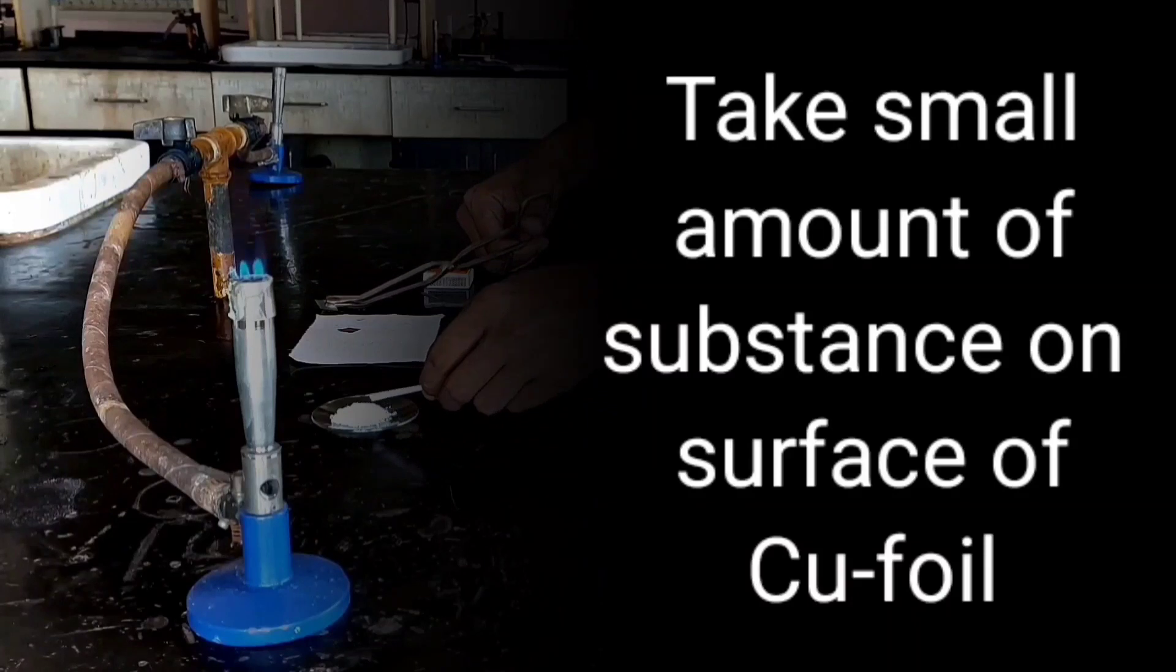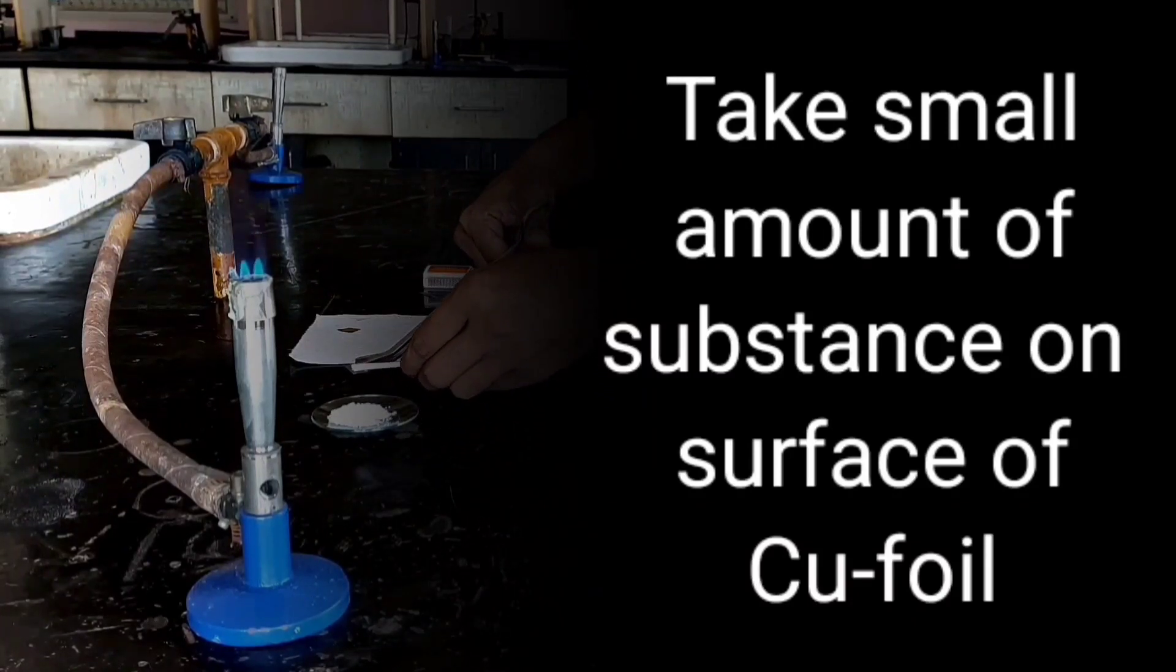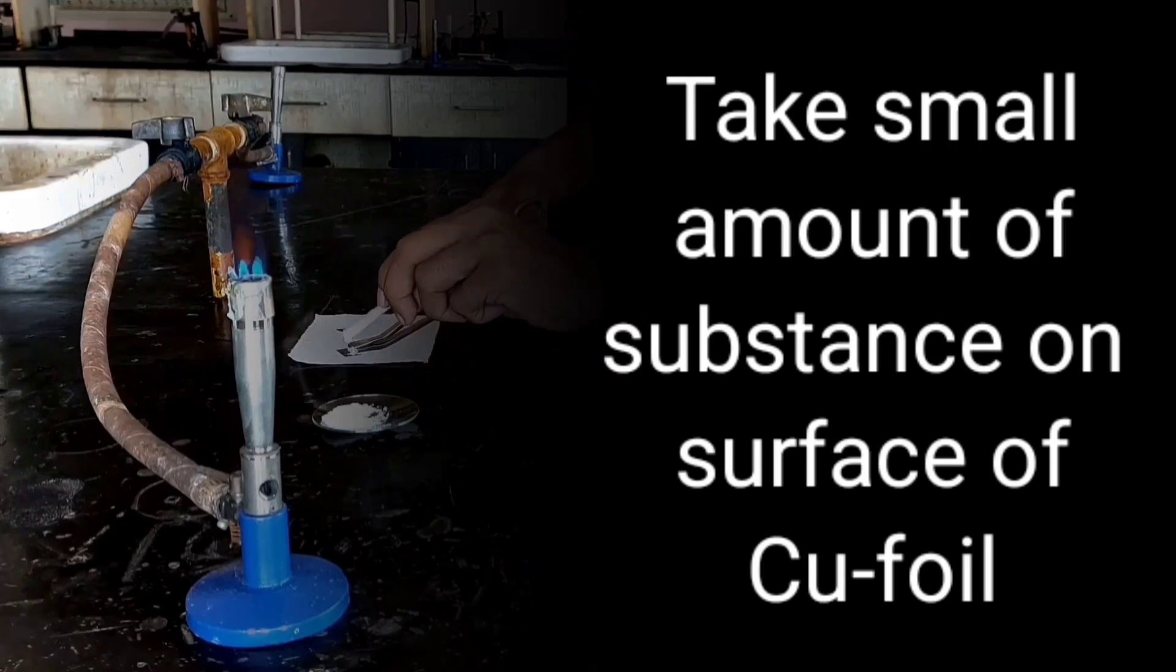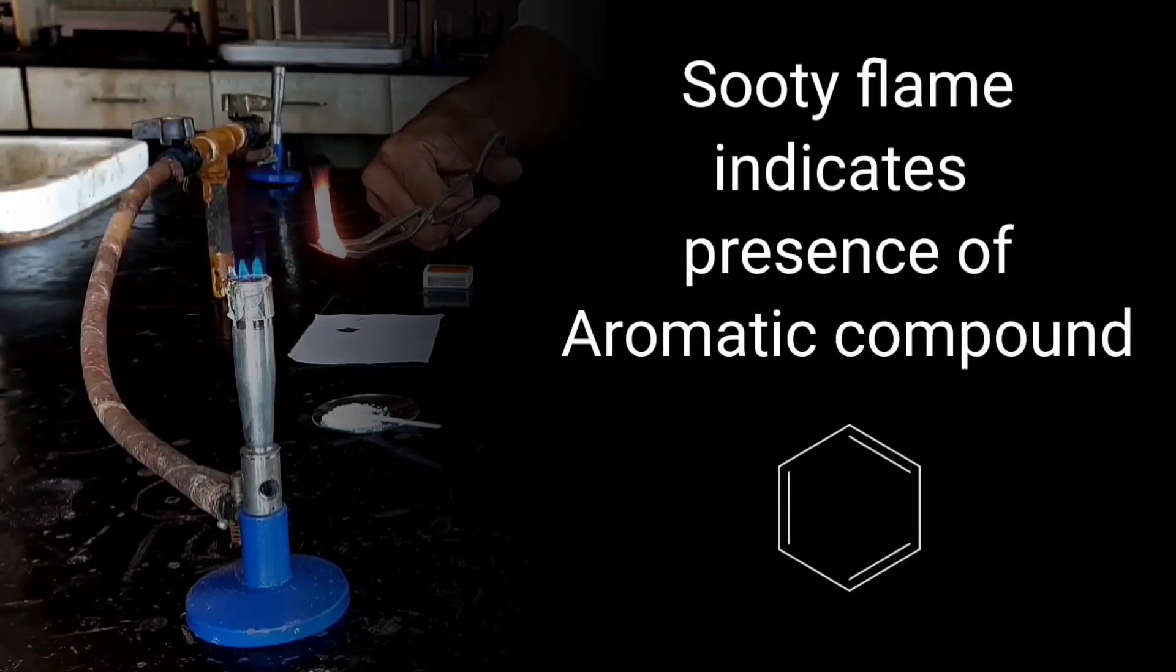Take small amount of substance on the surface of copper foil and heat it on oxidizing flame. Sooty flame indicates presence of aromatic compound.